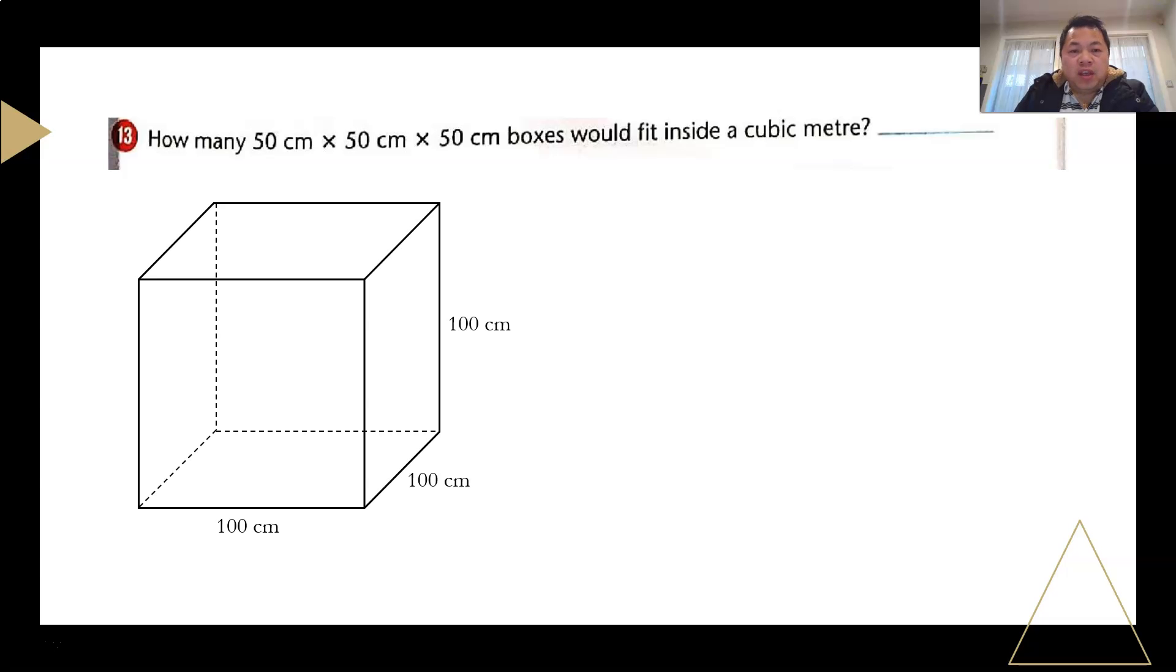And this one is a good thinking question. They say how many 50 cm by 50 cm by 50 cm boxes can be fitted into this cubic meter. Some people say, first I find the volume of the big box, and then after that, I find the volume of the small box, and then I divide accordingly. In reality, we don't do that, so I'm going to teach you the logical reasoning method.